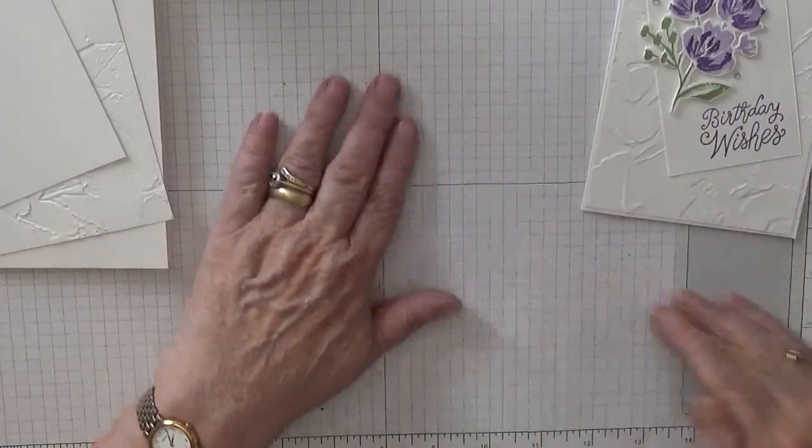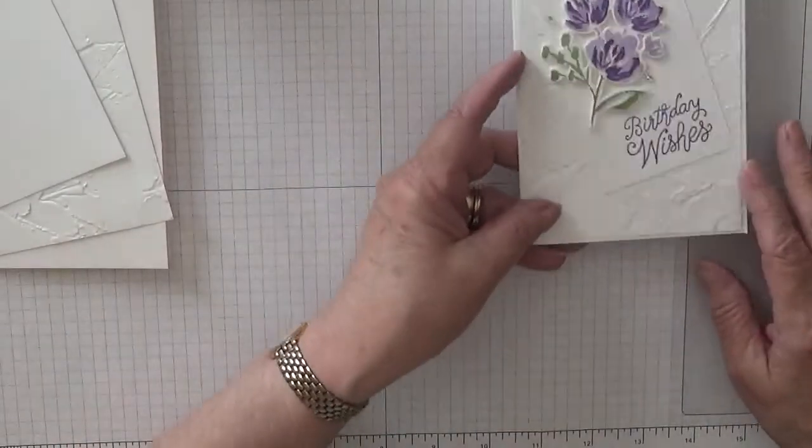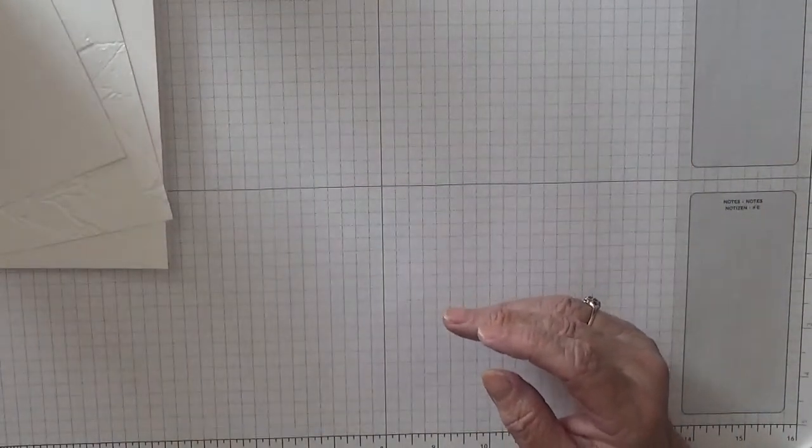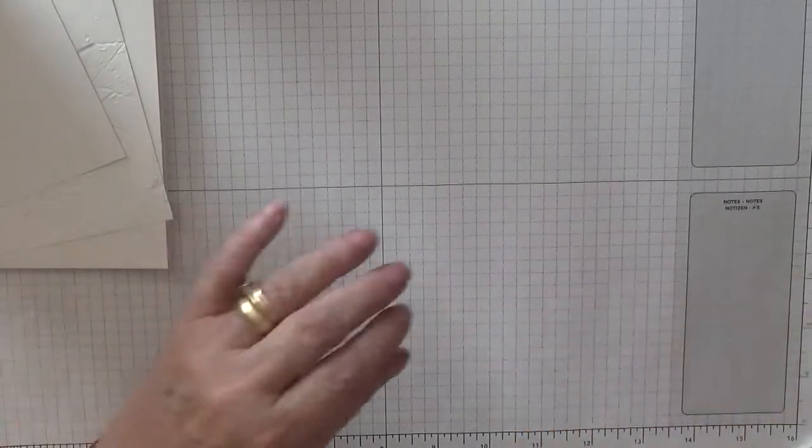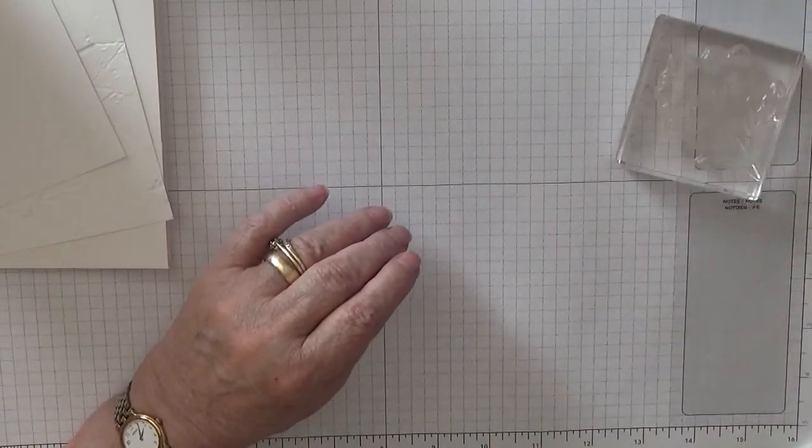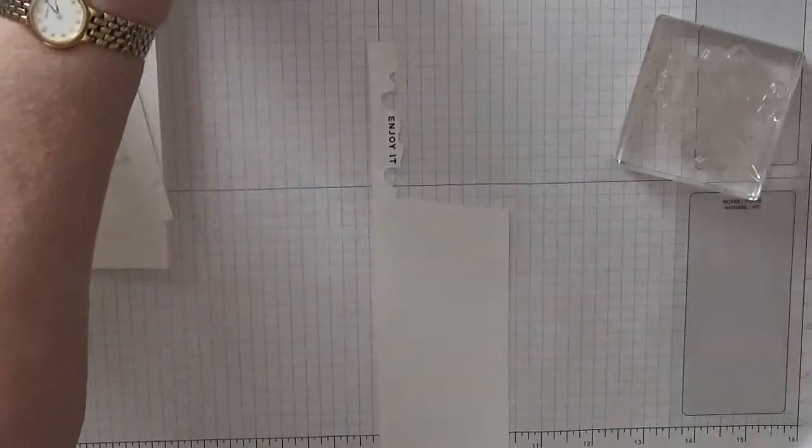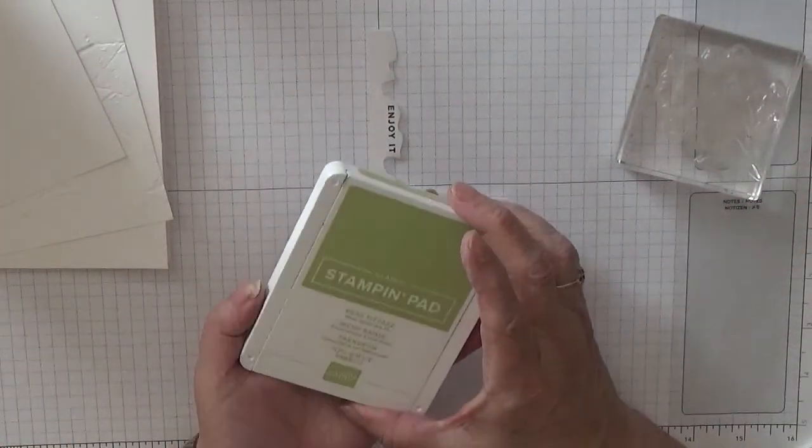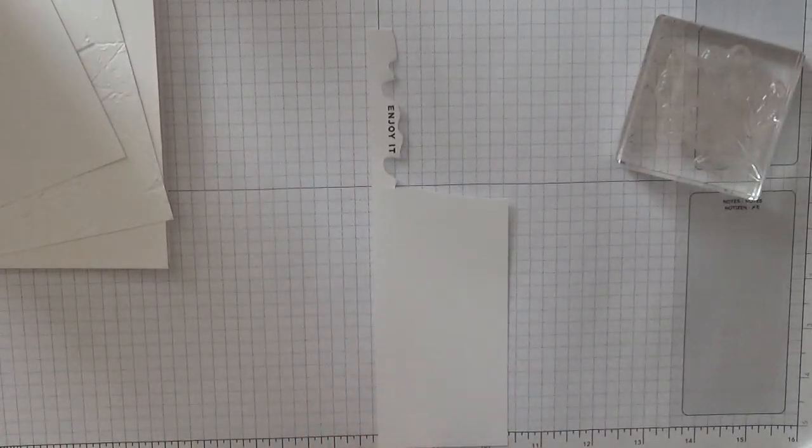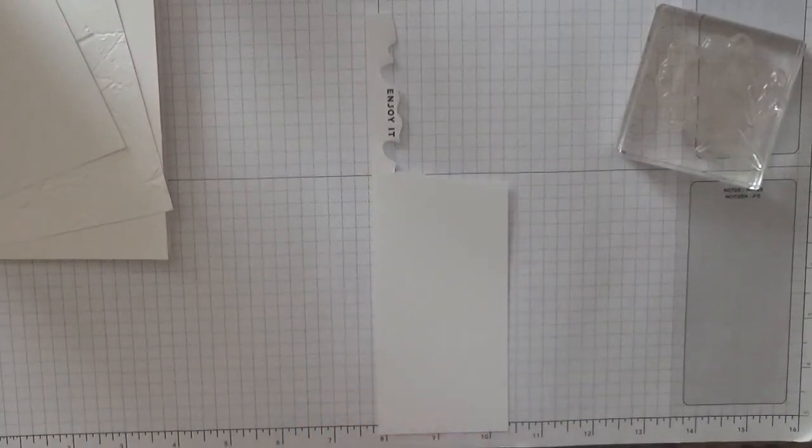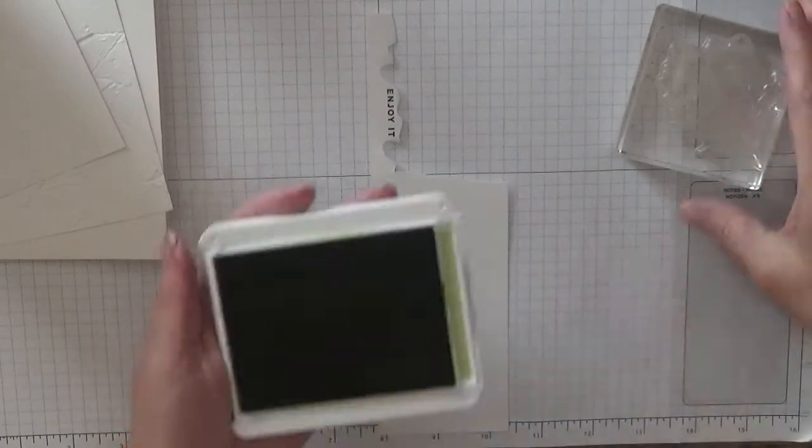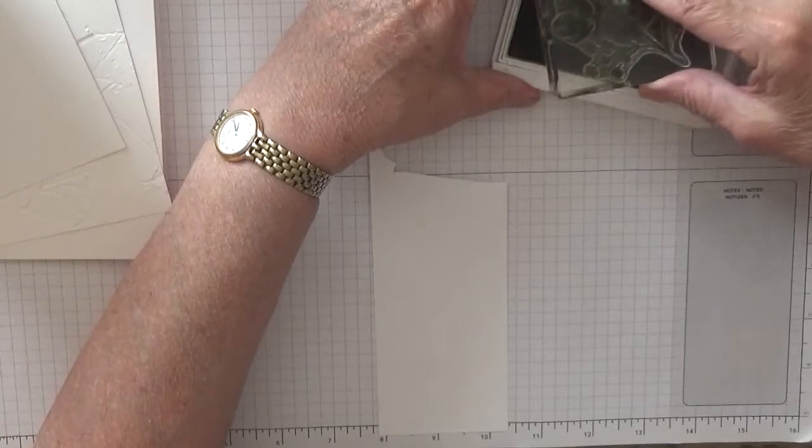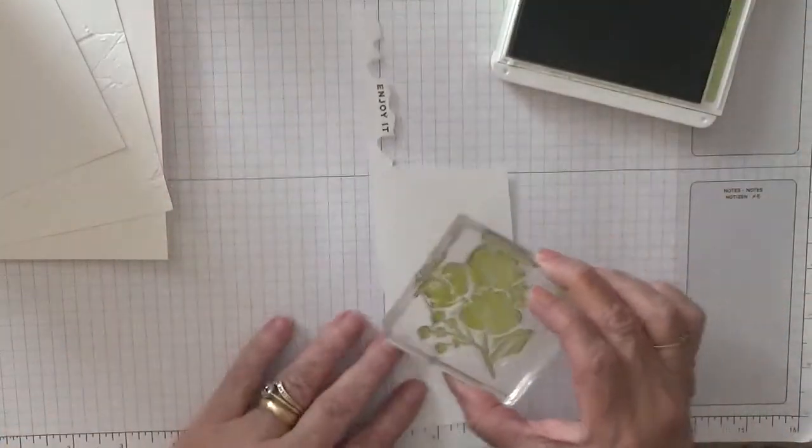So that's what we're going to do. I've got some scraps now, and we're going to stamp this flower twice. So first of all we're going to stamp it in pear pizzazz. You can tell I don't use this one very often.